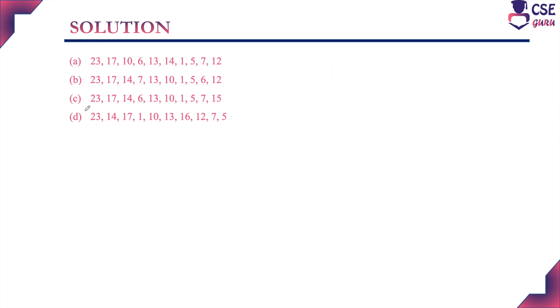Now we will consider these four options. For all four options, we will construct a binary tree and check whether it is a max heap or not. In any binary tree, the first node is the root node occupying position A[1], the second node A[2], the third node A[3], likewise up to A[10].